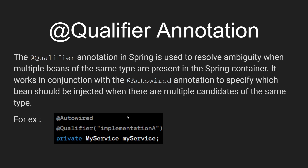But the first question is: how can there be two or three beans of the same kind? We know that all class names in Java and Spring Boot are different, so how is it possible that there will be two or three beans with the same name? To clarify this, let's move to the editor and I'll first show you how it's possible, then how we can resolve it using the @Qualifier annotation.